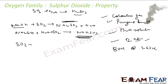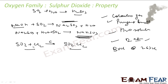SO2 also reacts with Chlorine in the presence of charcoal as a catalyst to form Sulphuryl Chloride (SO2Cl2). Additionally, SO2 can be oxidized in the presence of a Vanadium Oxide catalyst to form SO3.